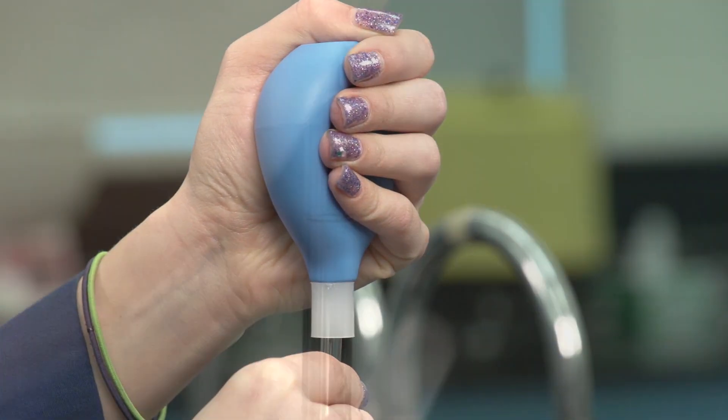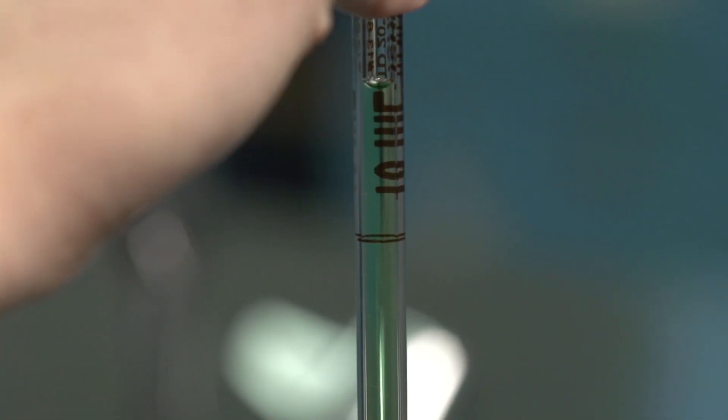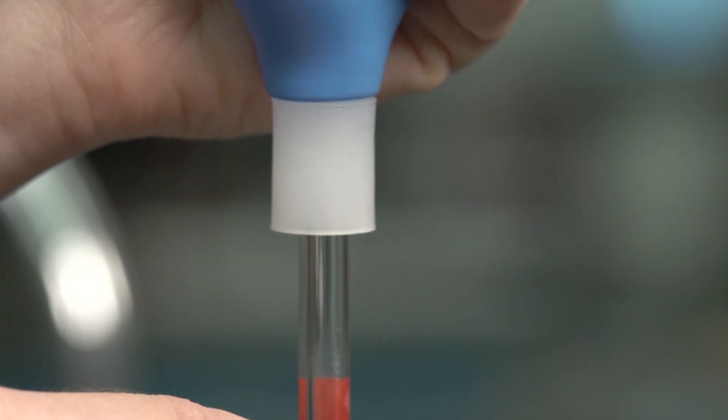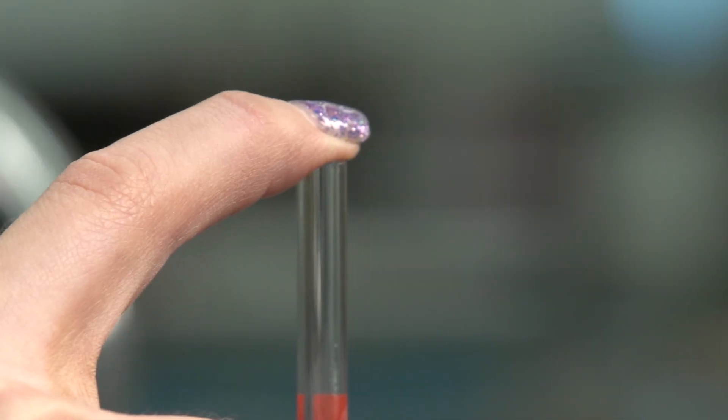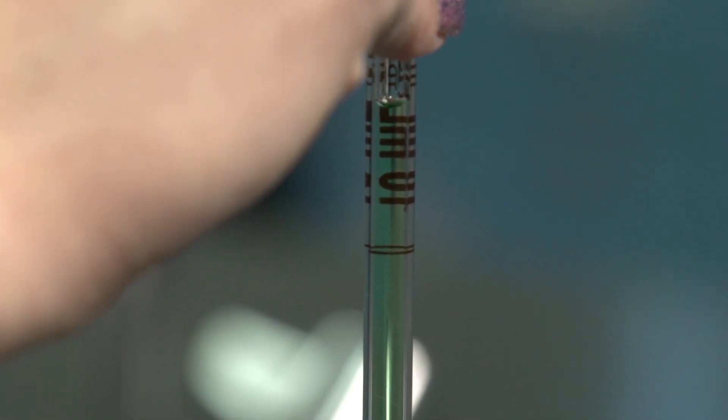Using the pipette bulb, draw the solution into the pipette until it is filled to about two to three centimeters above the graduation mark. Remove the bulb and quickly place your forefinger over the top of the pipette stem. Make certain that there are no air bubbles in the bulk of the liquid or foam at the surface.